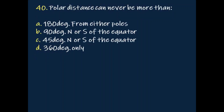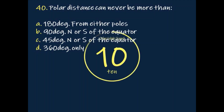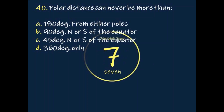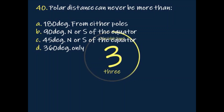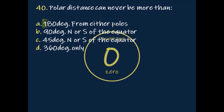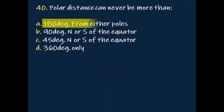Question: Polar distance can never be more than? Answer: 180 degrees from either pole.